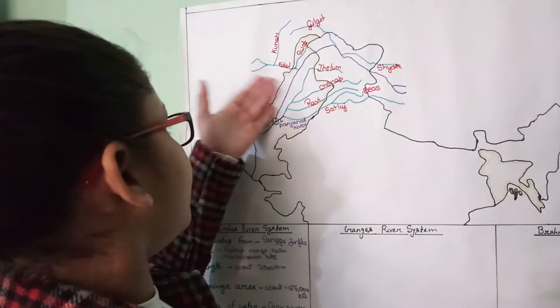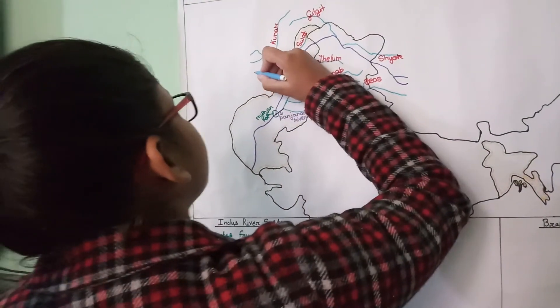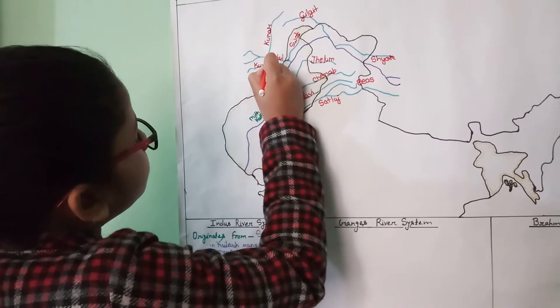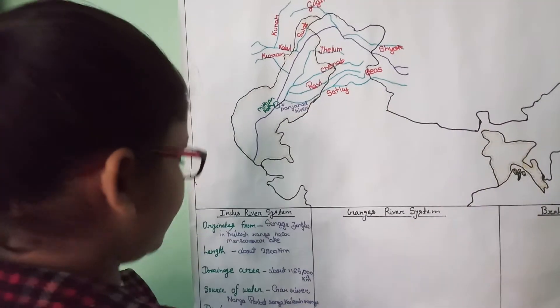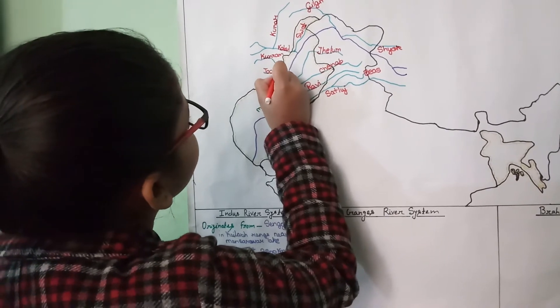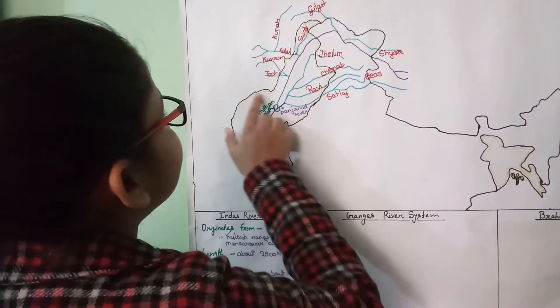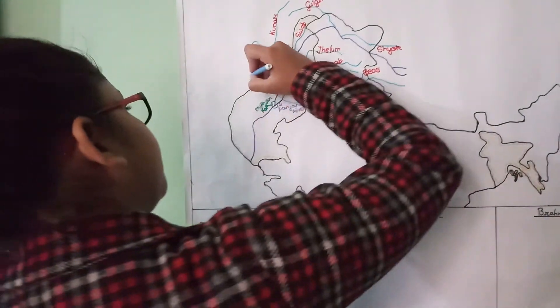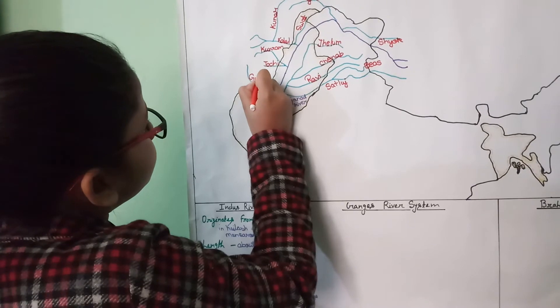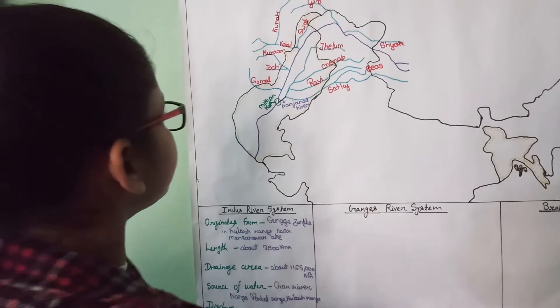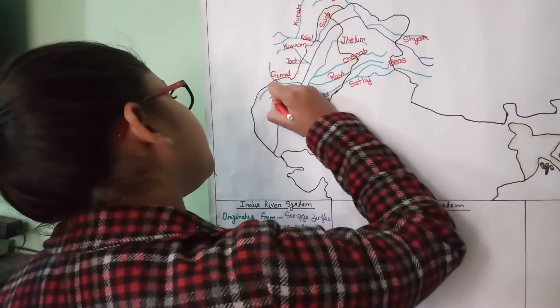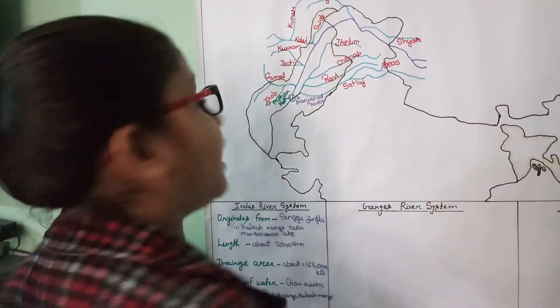Then this is Kurram, and this is Gomal, and this is Tochi. And this is Zhob, and this is Kundar.